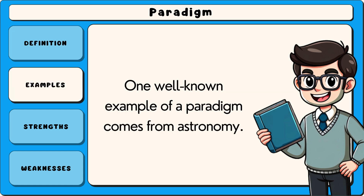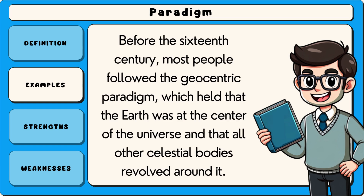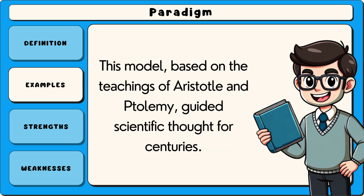One well-known example of a paradigm comes from astronomy. Before the 16th century, most people followed the geocentric paradigm, which held that the Earth was at the centre of the universe and that all other celestial bodies revolved around it. This model, based on the teachings of Aristotle and Ptolemy, guided scientific thought for centuries.